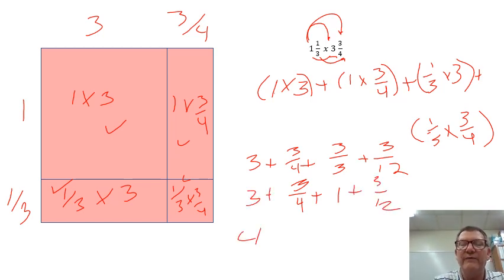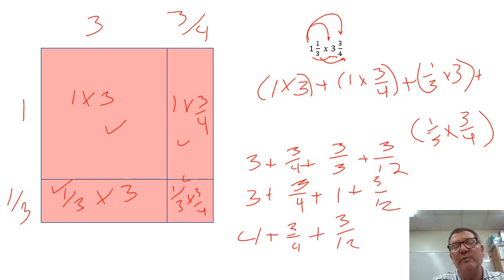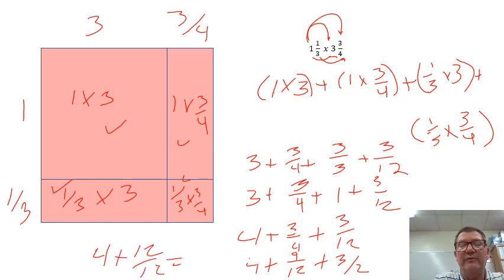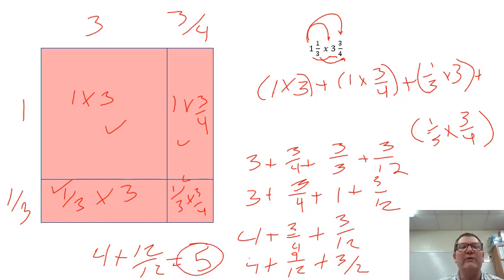Three-thirds equals one, so now I have four plus three-fourths plus three-twelfths. For three-fourths, if I multiply the four by three I get twelve, and the three by three I get nine. So now I have four plus nine-twelfths plus three-twelfths. Nine plus three is twelve, so that's twelve-twelfths, which equals one. The answer is five. The area for this one is five.